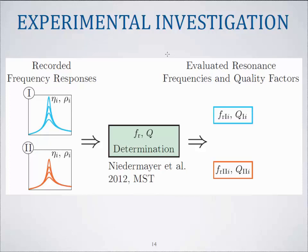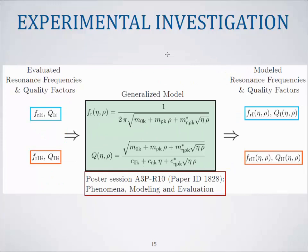Once we had the evaluated resonance frequencies and quality factors for the first and second mode, we fitted the parameters for a generalized model relating the resonance frequency and the quality factor to mass density and viscosity. If you're interested in this generalized model which was successfully implemented for all sorts of resonating sensors, there will be a poster today in the poster session A3P and the poster number is R10.